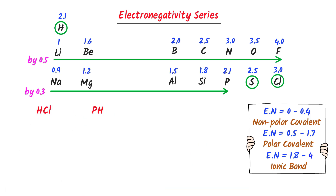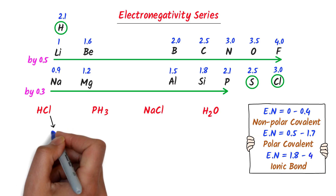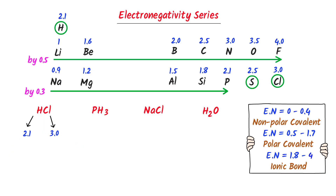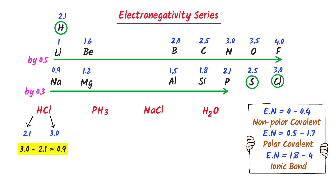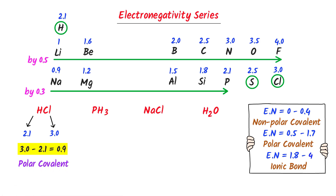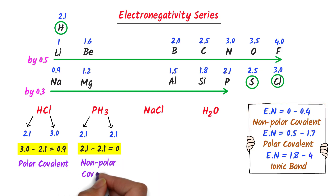For example, calculate the electronegativity difference in the given compounds. The electronegativity of chlorine is 3.0 and hydrogen is 2.1, so 3.0 minus 2.1 equals 0.9 — this is a polar covalent bond. Secondly, hydrogen and phosphorus both have electronegativity 2.1, so 2.1 minus 2.1 equals 0 — this is a non-polar covalent bond.